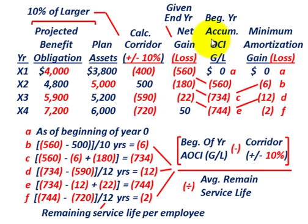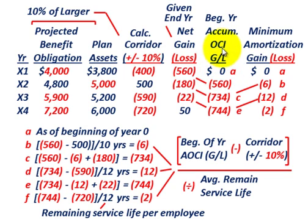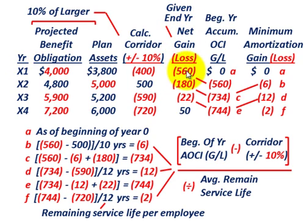Now we need to calculate the beginning-of-year accumulated other comprehensive income gain or loss, and from that the minimum amortization gain or loss. Starting with year X1, we begin with a zero balance in accumulated other comprehensive income — no gain or loss. Based on that, the minimum amortization is zero. We're given a net loss of $560,000 at the end of year X1, and the calculated corridor amount was $400,000, both based on end-of-year amounts.